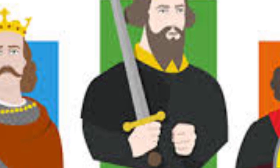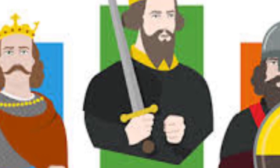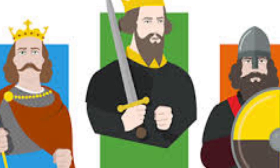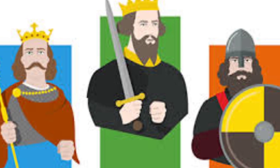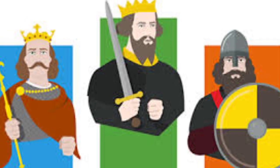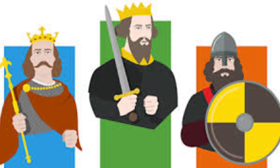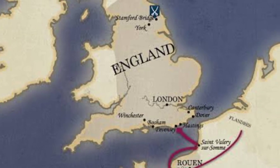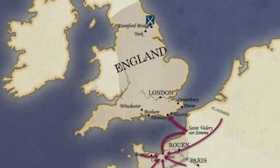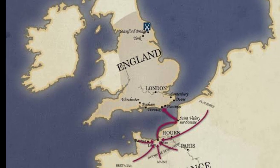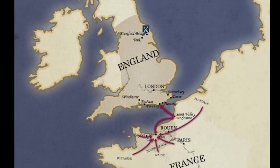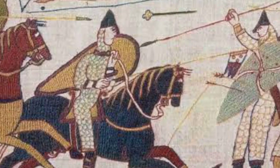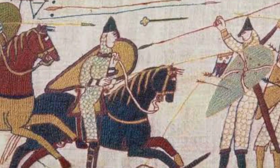Harold's army confronted William's invaders on the 14th of October at the Battle of Hastings. William's force defeated Harold, who was killed in the engagement, and William became king. Although William's main rivals were gone, he still faced rebellions over the following years and was not secure on the English throne until after 1072.